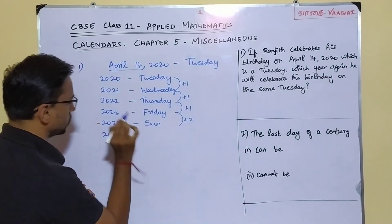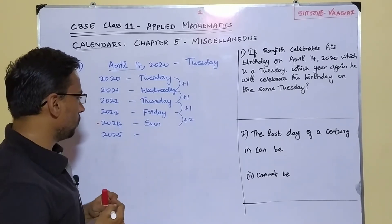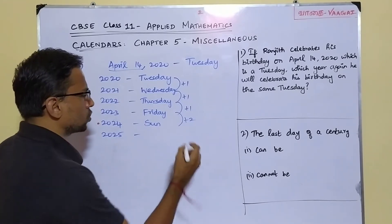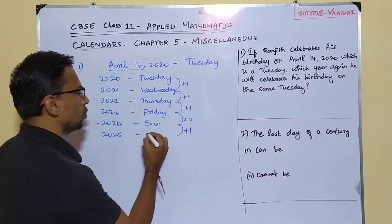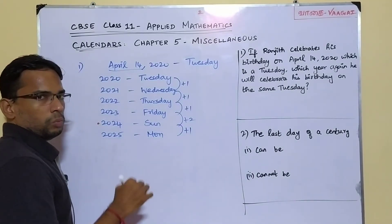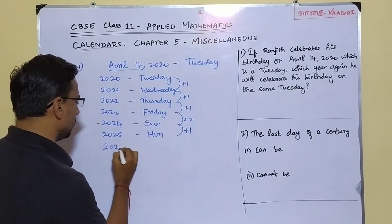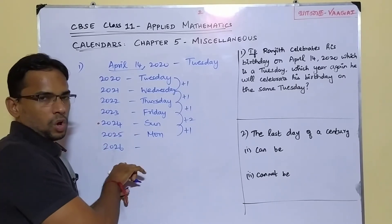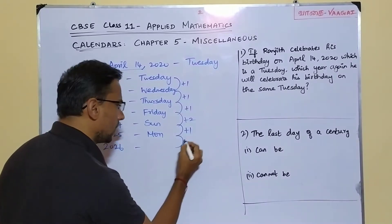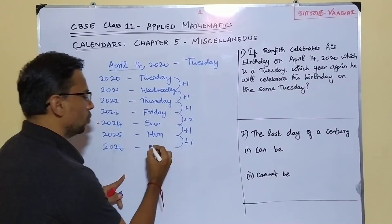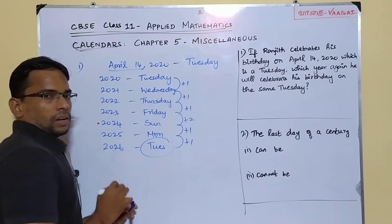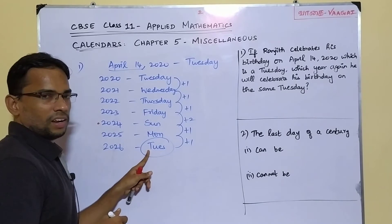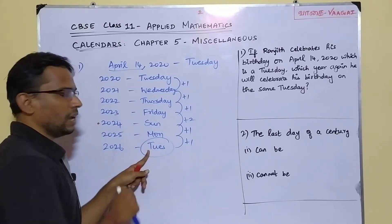Moving to 2025: from 2024's April to 2025's April is 365 days, so plus one. Sunday plus one gives Monday. And for 2026: from 2025's April — again an ordinary year, 365 days — plus one. Monday plus one gives Tuesday. We have reached Tuesday again in the year 2026.